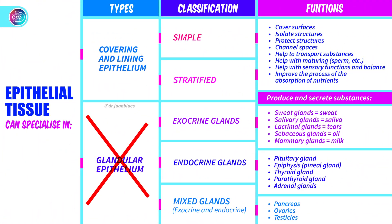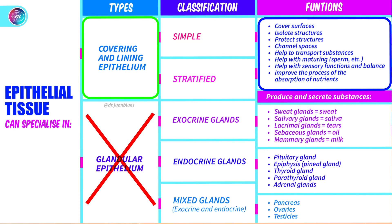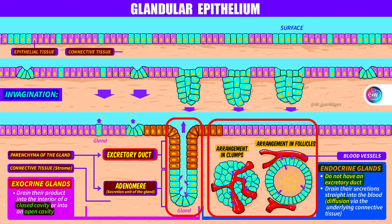Today we're not going to look at the glandular epithelium. Today we are going to explain covering and lining epithelium, which covers the different surfaces of the body and therefore carries out different functions. But at some point during today's video, we will see how covering and lining epithelium also covers the surfaces of the ducts of the exocrine glands, or even the surface of the interior of follicles in endocrine glands. So let's look at the epithelial tissue which covers surfaces — what types are there? How can we classify them?